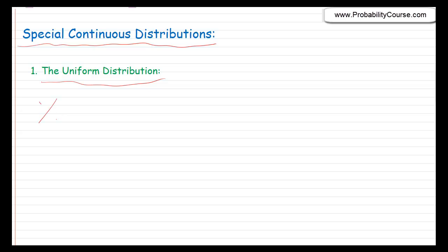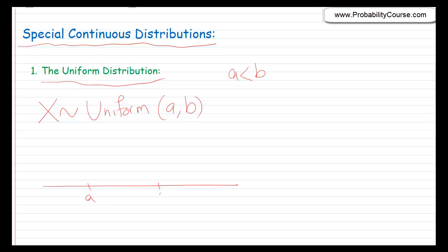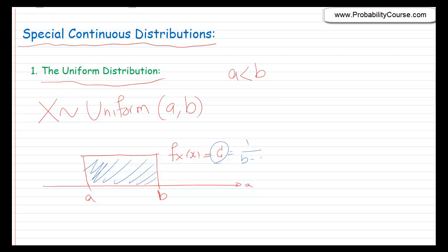We write X is uniformly distributed, and this distribution has two parameters, a and b, where a and b are real numbers such that a is less than b. This random variable X is uniformly distributed from a to b, meaning the value of f_X(x) is constant in this range — just constant c — and 0 otherwise. Because this must be a valid PDF, this area must equal 1, so the constant is in fact 1 over b minus a.